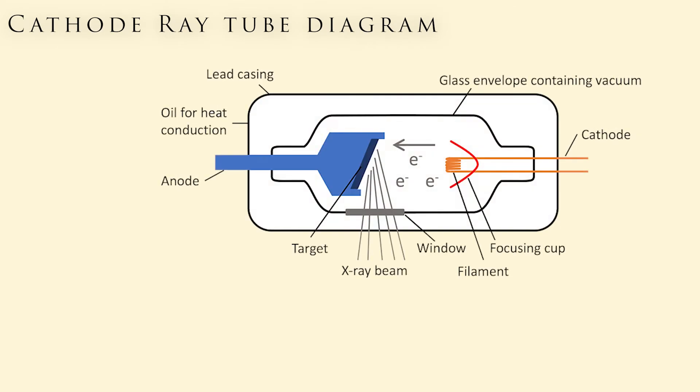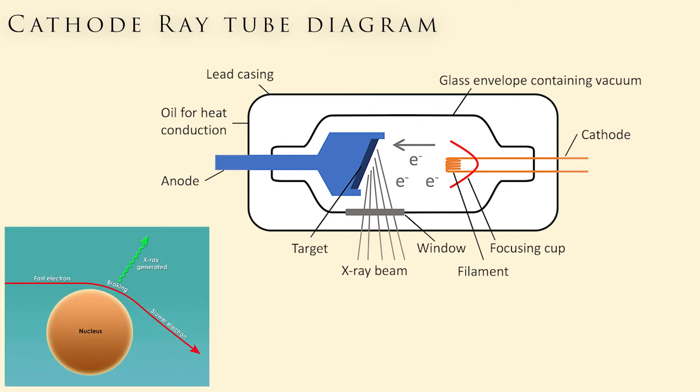They can be produced through a variety of means, but the most common for our application is the cathode ray tube. A vacuum tube uses a high voltage across a cathode and an anode. Electrons leave the cathode and collide with the anode. This collision produces X-rays, the spectrum of which depends on the anode material and the accelerating voltage used.